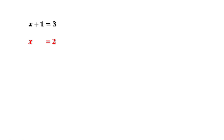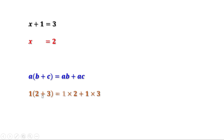There are certain equations which are always true. For example, a into b plus c equal to ab plus ac. Let me put a equal to 1, b equal to 2 and c equal to 3. Then we get 1 into 2 plus 3 equal to 1 into 2 plus 1 into 3. 1 into 5 is 5, and 2 plus 3 is 5. So this equation is true when a is 1, b is 2 and c is 3.